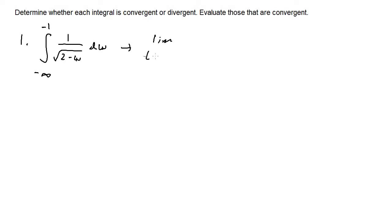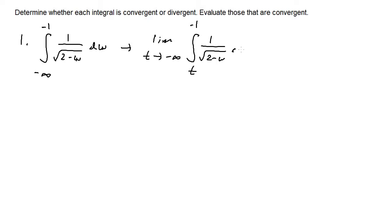The first step to evaluating an improper integral is to set up limit notation. We say the limit as t approaches negative infinity — our improper bound — of the integral from t to negative one of one over the square root of two minus w, dw. We replace the infinite bound with t.